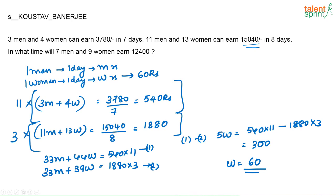So how much will 1 man in 1 day earn? From here just find out what is M. M is nothing but, see 3M plus 4W is 540. So 4 into 60 is 240. So 540 minus 240. That is 300. So 3M is 300 or M is equal to 100. Or I can say 1 man in 1 day will earn 100 rupees.